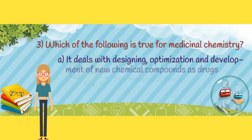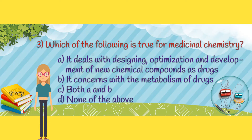Question 3. Which of the following is true for medicinal chemistry? Option A: it deals with designing, optimization, and development of new chemical compounds as drugs. Option B: it concerns with the metabolism of drugs. Option C: both options A and B. Option D: none of the above. The correct answer is Option C.